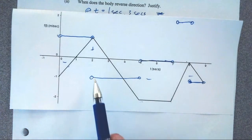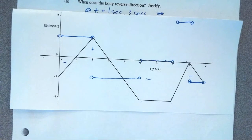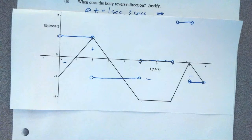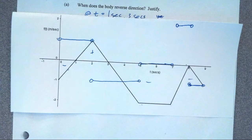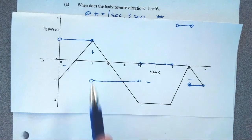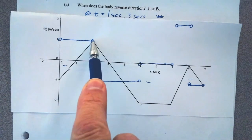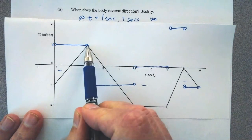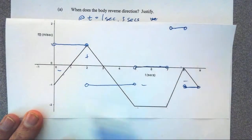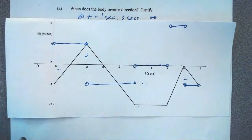Should one of these get a dot? Here's the big hint: acceleration is the derivative of velocity. Can I take the derivative at a corner point? No — no corner points, no cusps — can't take the derivative there. So acceleration doesn't make any sense at a corner point. Or think of it this way: what would the tangent line look like at that point? I don't know — it could be a lot of things.